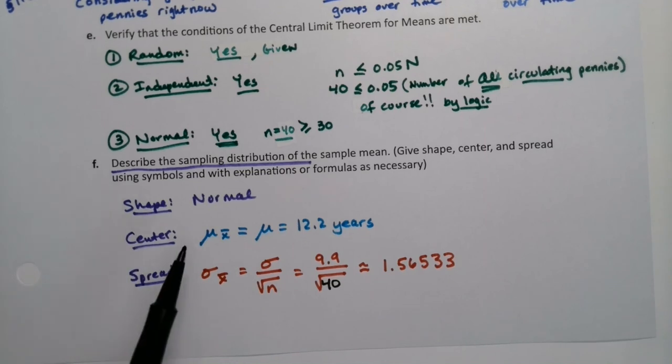Now, if we know that it's normal and has a center and spread, that means that we're going to be able to find probabilities associated with that. We'll see that in the next video as well, but for this same problem.